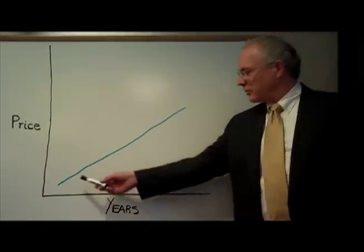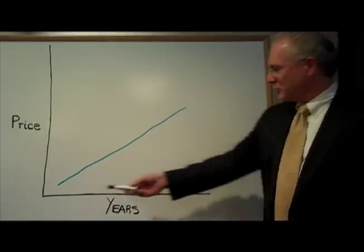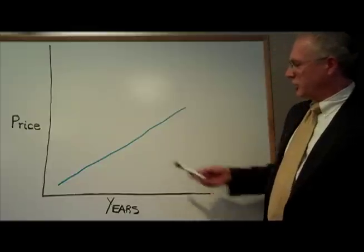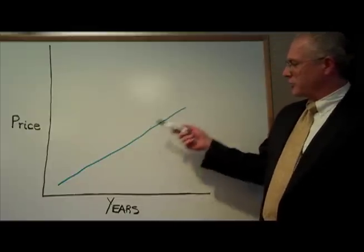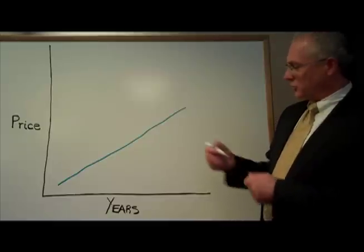Assume that under the cap and trade program this might be the optimal price path of greenhouse gas allowances over the course of the program, gradually escalating and allowing for the deployment of technologies as the price increases over the course of time.